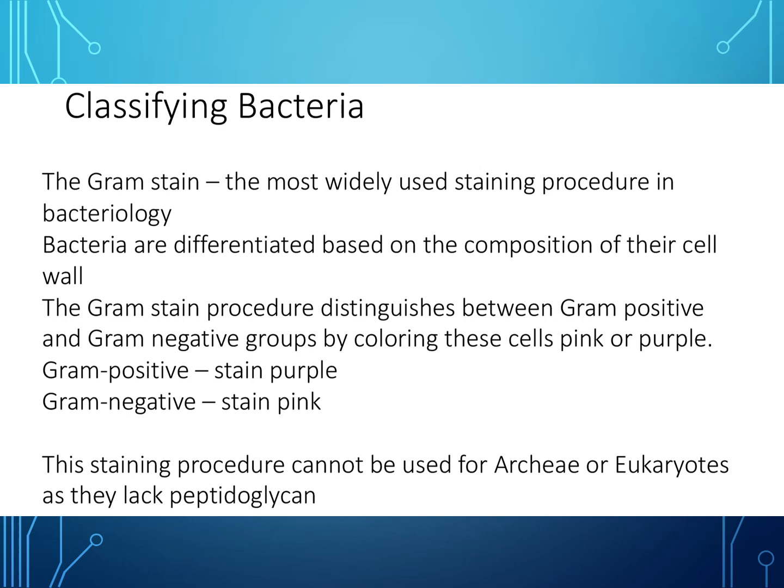Bacteria can also be classified via the gram stain, which is the most widely used staining procedure in bacteriology. They are differentiated based on the composition of their cell wall. The gram stain procedure distinguishes between gram positive and gram negative groups by colouring these cells pink or purple. Gram positive organisms stain purple whereas gram negative organisms stain pink. It is important to note the staining procedure cannot be used for archaea or eukaryotes as they lack peptidoglycan cell walls.